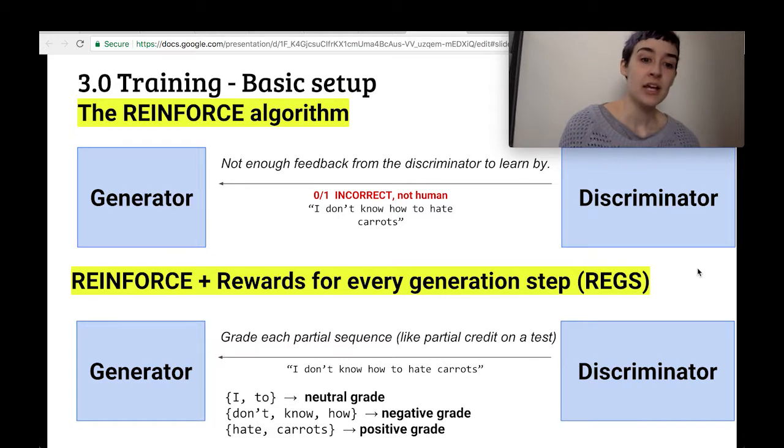So they add this Rewards for Every Generation Step, REGS. And what this does is it takes apart the sentence into little words like I, how, carrots, and subsequences like 'how to hate carrots' or 'I don't know,' and it grades each of those individually. So the generator sort of gets partial credit on the test, so to speak, so that it can learn which parts of the sentence worked and which ones were bad.